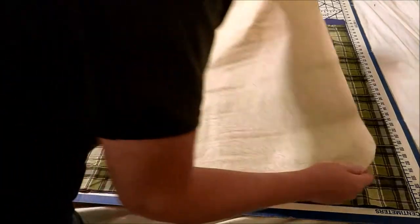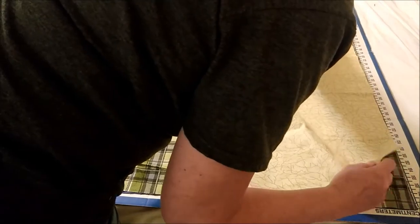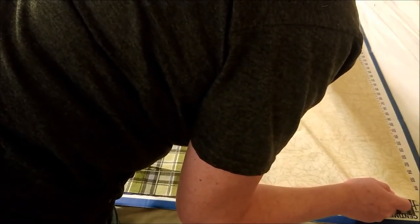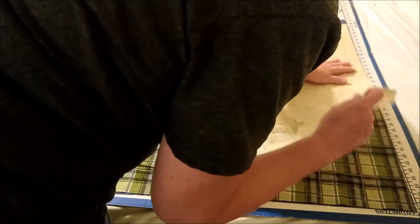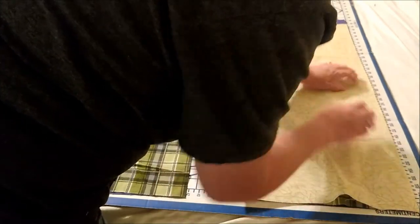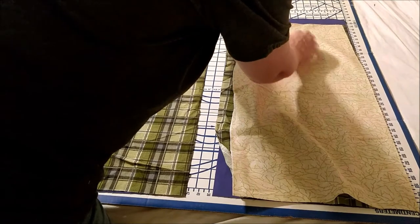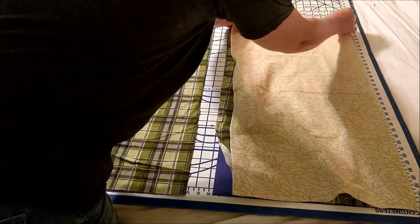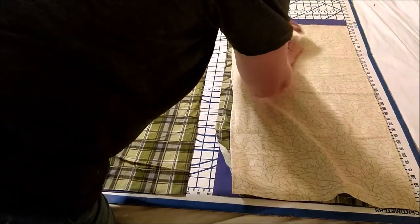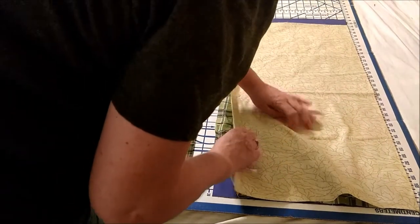And then we take the inside cotton. Same thing. Line up the top of the inside cotton with the top of the flannel, even if it hangs over the bottom a little bit. And again, line up the same edge you did before, because that's where you're going to line up the template.